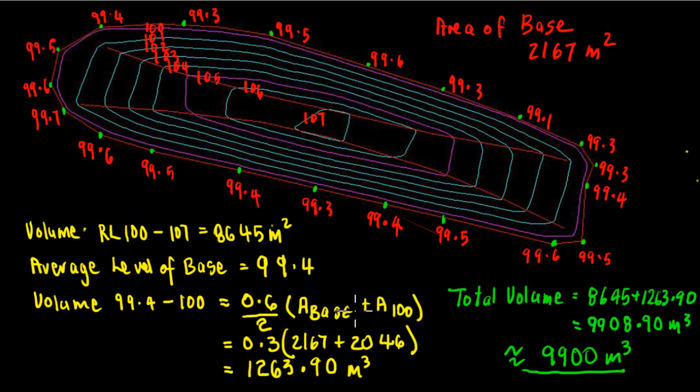So it's just the average area essentially by the distance between them, which works out to be 1263.90. So in this particular instance, what I would do is take the total volume, which would be the 8645 that we worked out using the end area formula - which is the volume between 100 and 107 - plus the little bit between the base and RL100, which we've calculated here as 1263.9, and so that gives us a total of 9908.9 cubic meters.